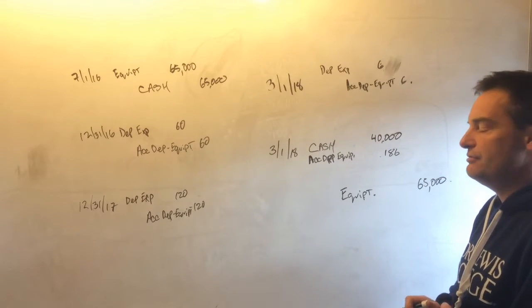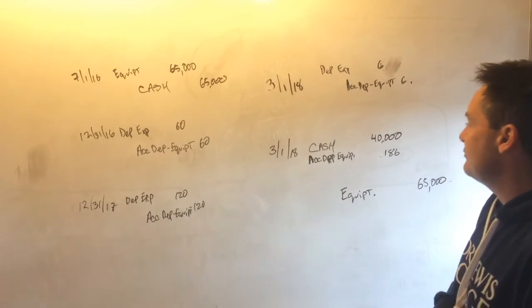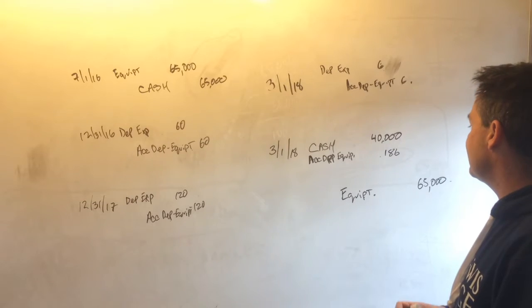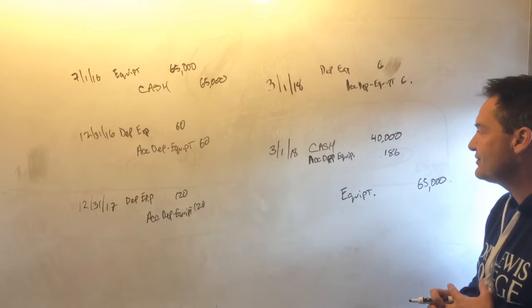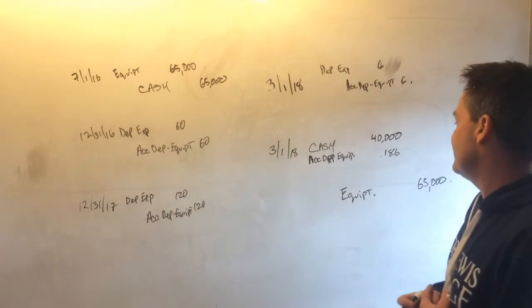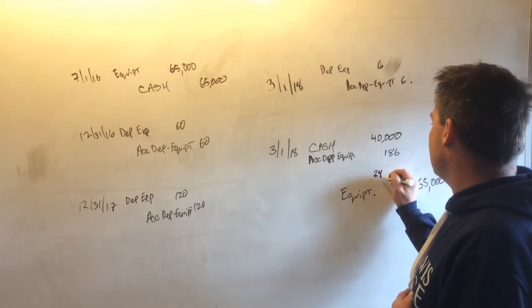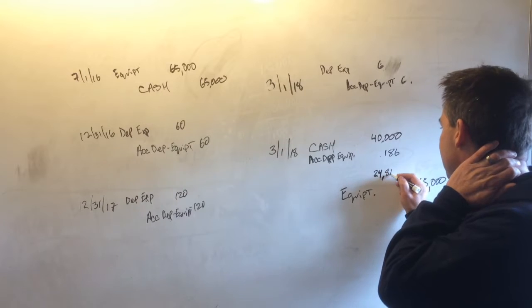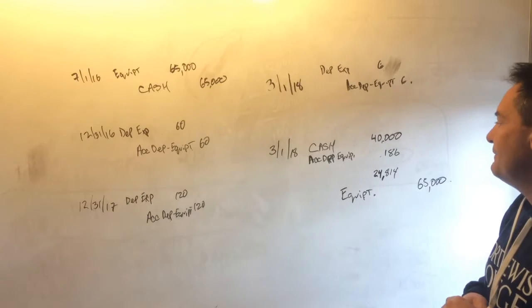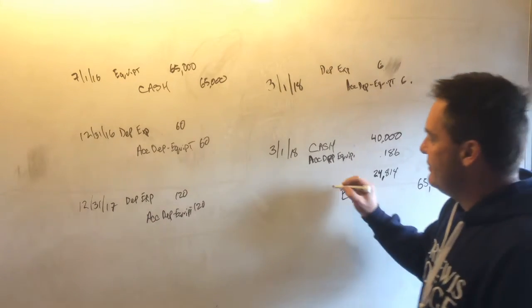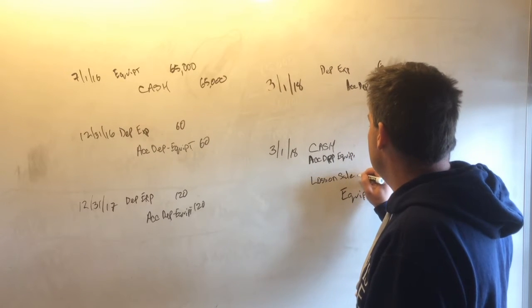Now you've got $40,186 of debits. It's only $65,000 worth of credits. So that means that you need another $24,814 of debits to make this work.